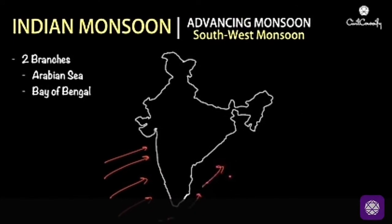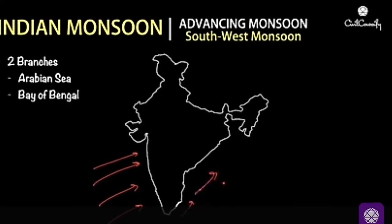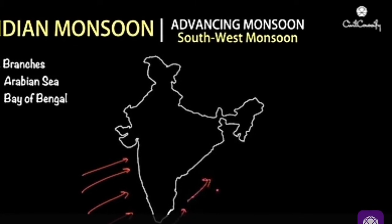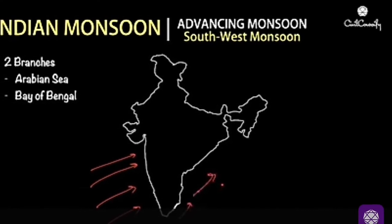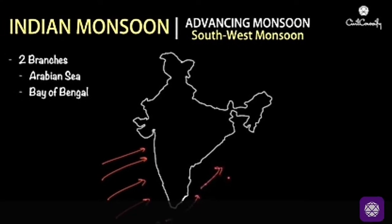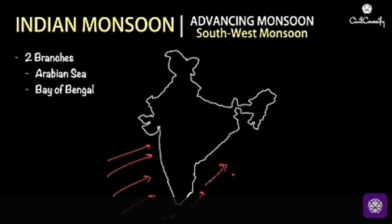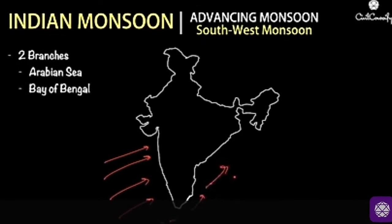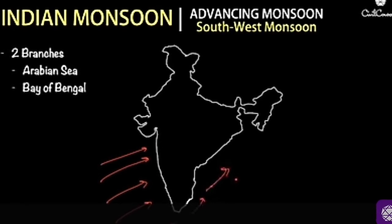The monsoon arrives at the southern tip of the Indian peninsula during the first week of June. During the first week, the advancing monsoon begins in the Indian peninsula. Subsequently, it gets divided into two branches — the Arabian Sea branch and the Bay of Bengal branch.